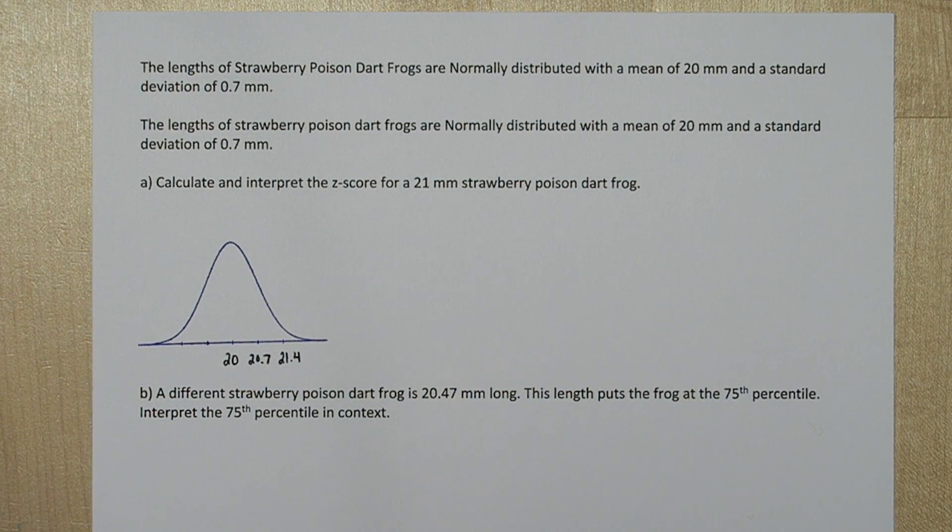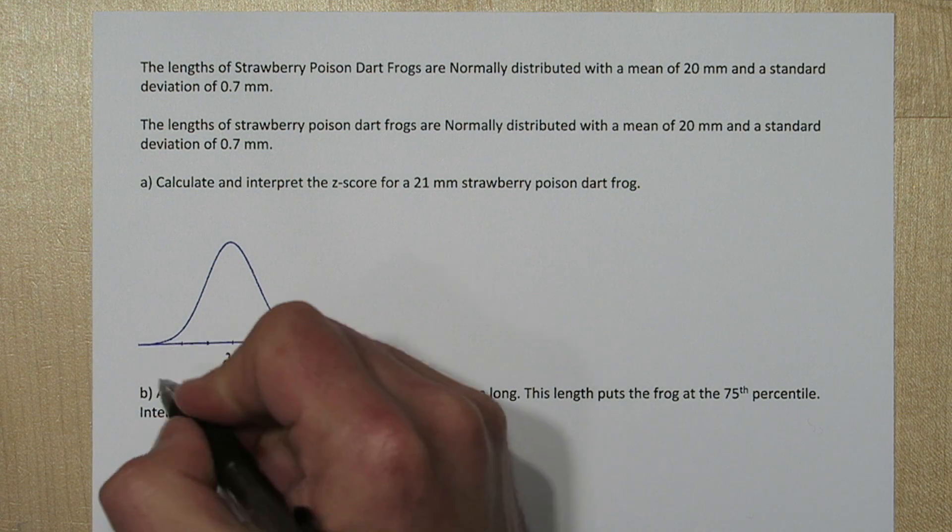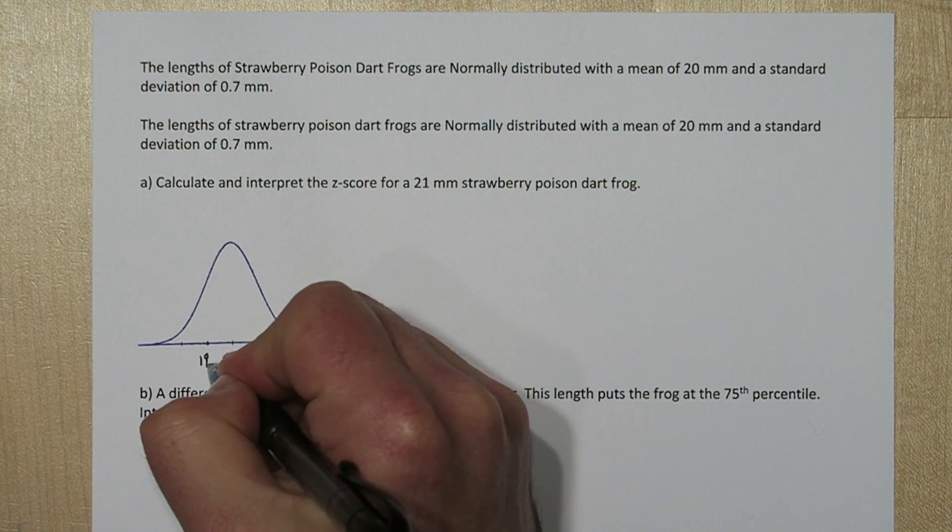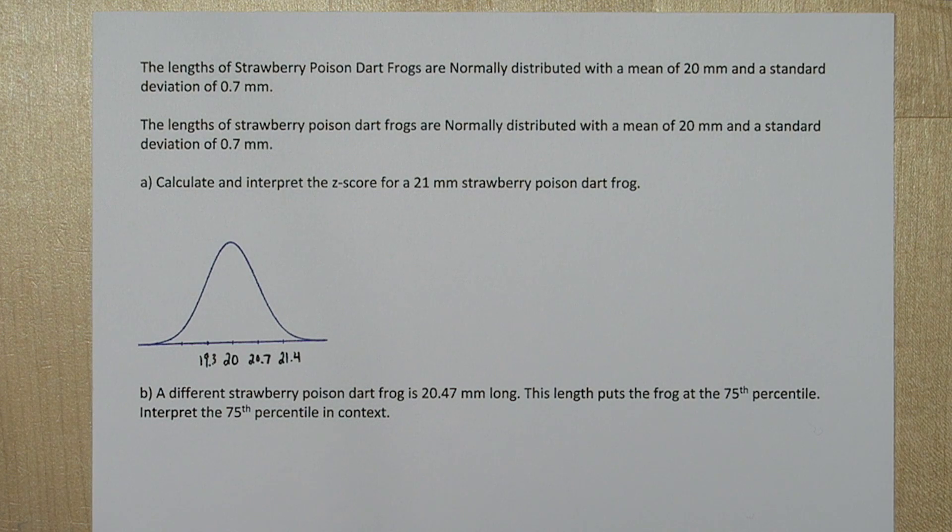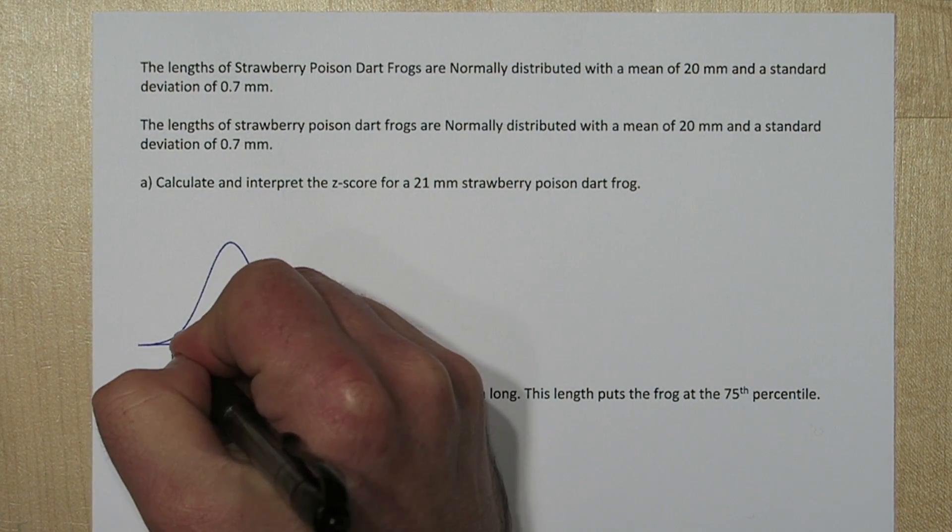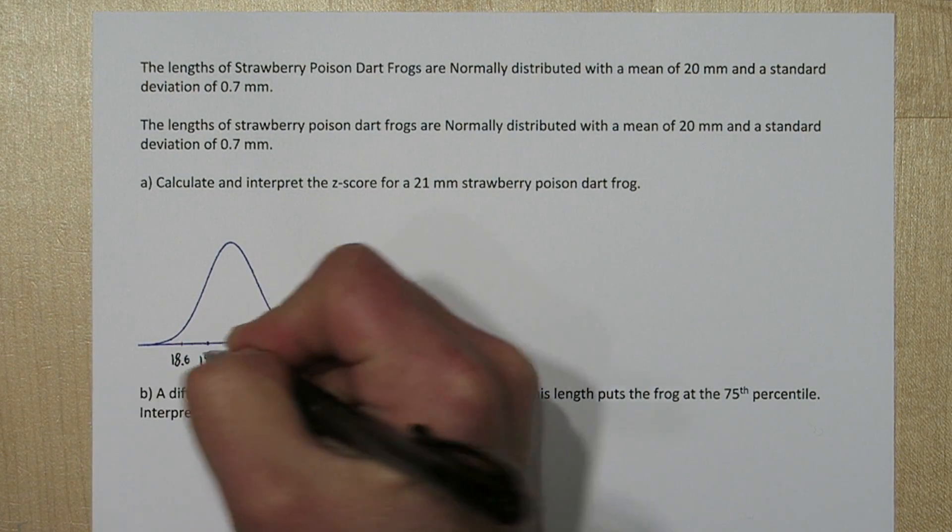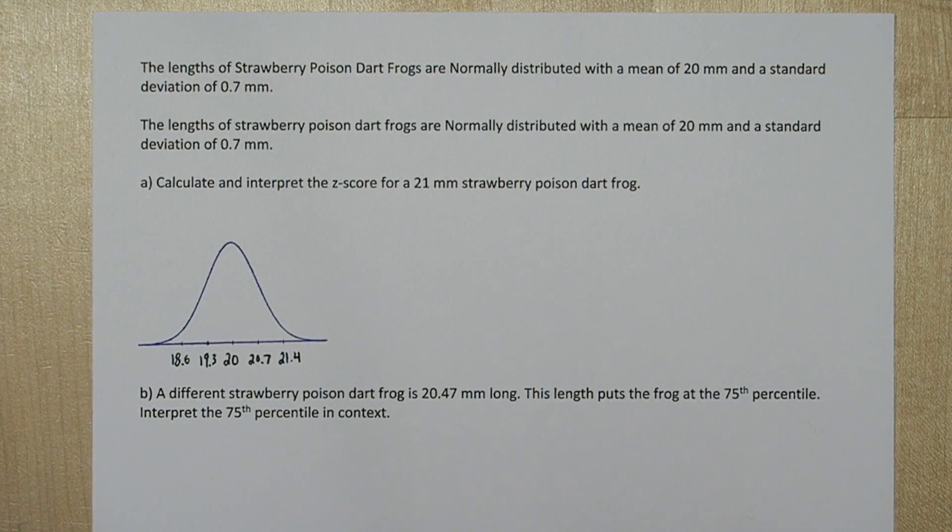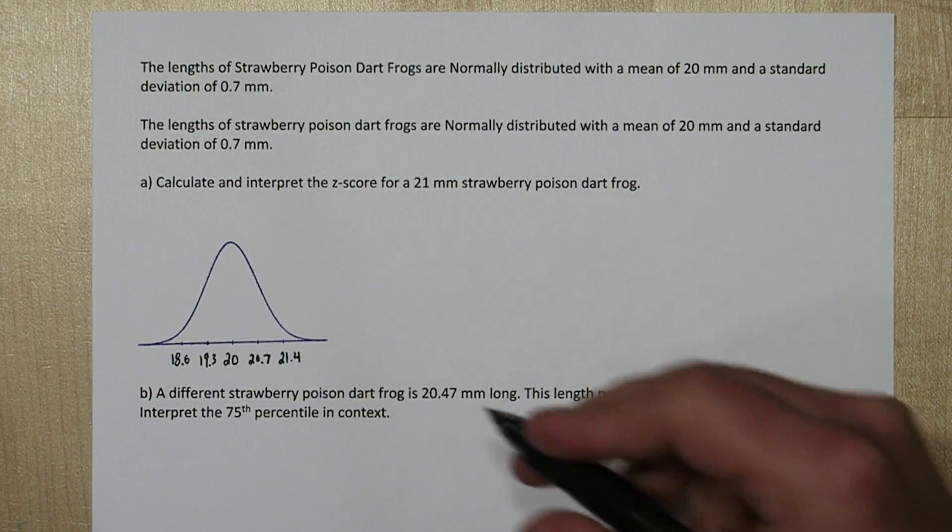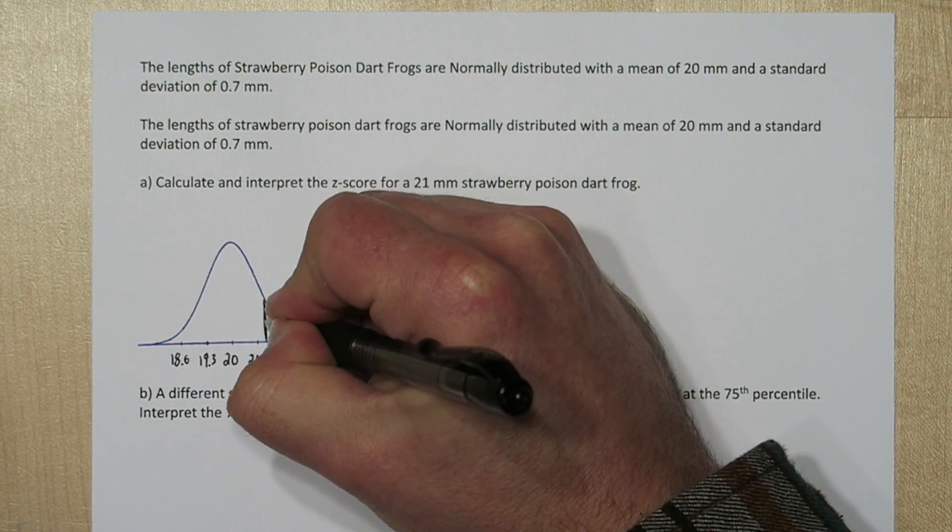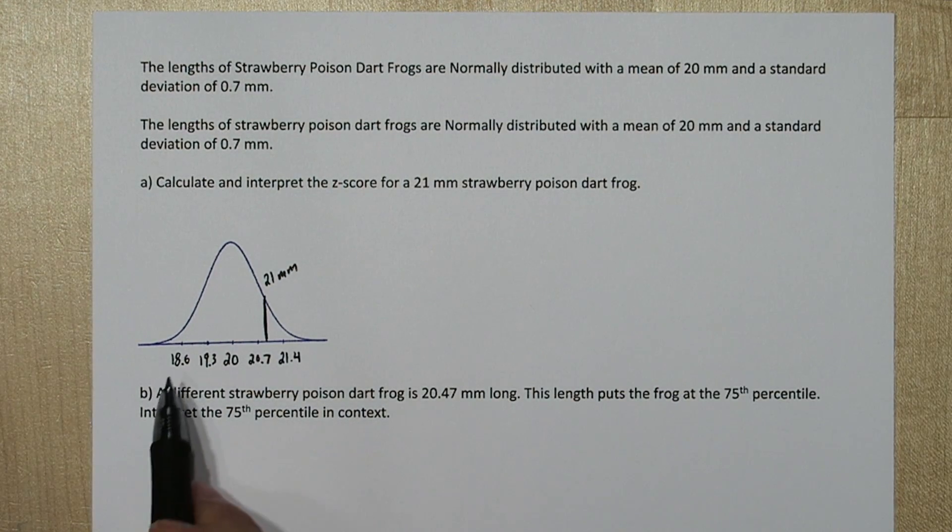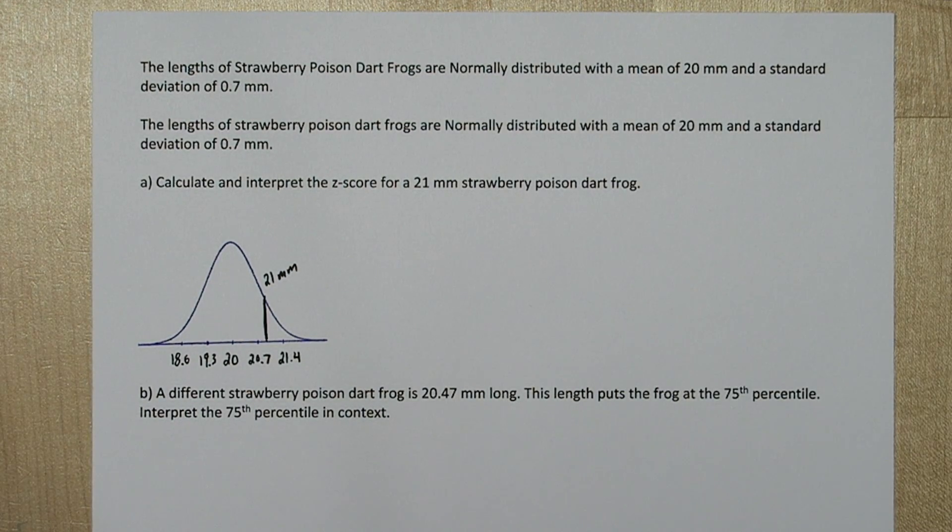On this side if I subtract 0.7 and go one standard deviation below the mean, I'm at 19.3, and one more standard deviation, I'm at 18.6. So a frog of 21 millimeters would be about right here. So this axis right now is in millimeters.